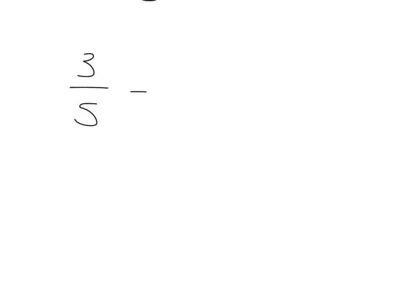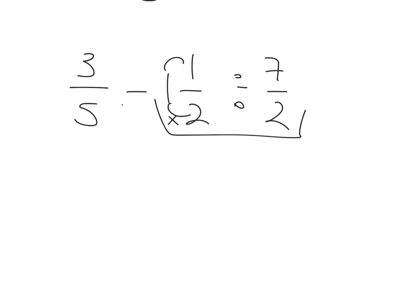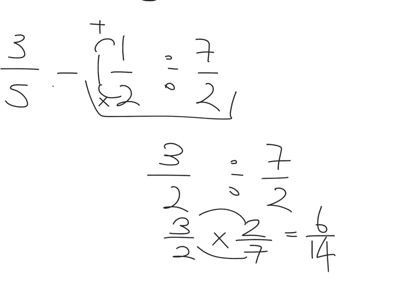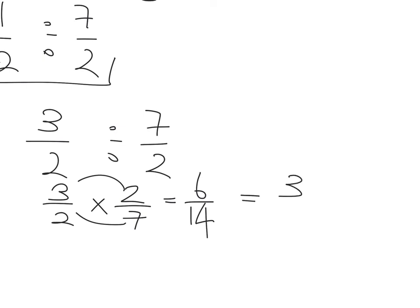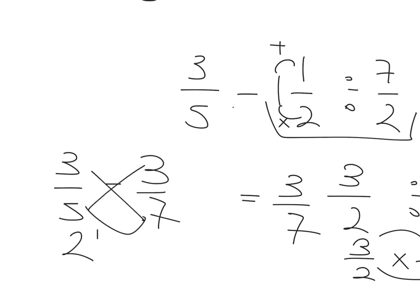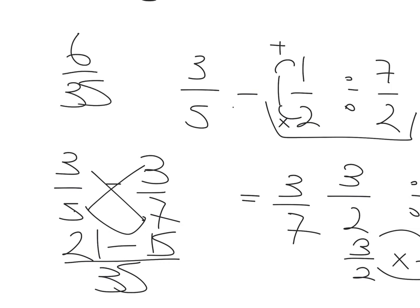Next one, we've got 3 fifths minus 1 and a half divided by 7 over 2. We've got a subtraction and a division — BODMAS tells me to do the division first. 1 and a half: 2 times 1 is 2 plus 1 is 3, so 3 over 2, divided by 7 over 2. That's 3 over 2 multiplied by 2 over 7. Multiply top and bottom to get 6 over 14, simplified to 3 sevenths. Bring that back in: 3 fifths minus 3 sevenths. Kiss and smile: 3 times 7 is 21, minus 3 times 5 is 15, over 5 times 7 is 35. 21 take away 15 is 6, giving 6 over 35, which can't be simplified. That's the final answer.